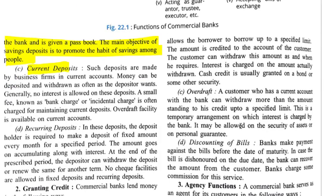The third type is current deposit. Such deposits are made by business firms. Money can be deposited and withdrawn as often as the depositor wants — any number of times with no restriction. Generally no interest is allowed on these deposits. Organizations that deal with money regularly on a daily basis open current accounts. A small fee known as bank charge or incidental charge is often charged for maintaining a current deposit account.